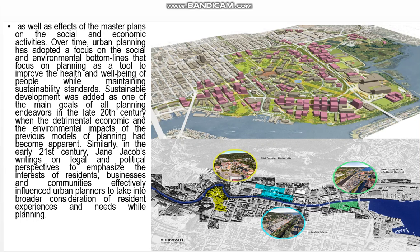Over time, urban planning adopted a focus on the social and environmental bottom lines, using planning as a tool to improve the health and well-being of people while maintaining sustainability standards. Sustainable development was added as one of the main goals of all planning in the late 20th century, when the detrimental economic and environmental impacts of previous planning models had become apparent.